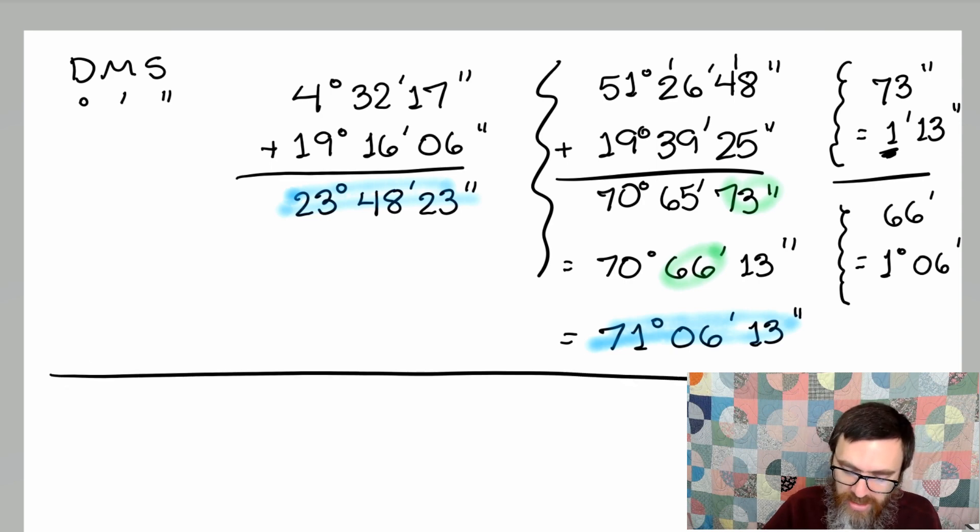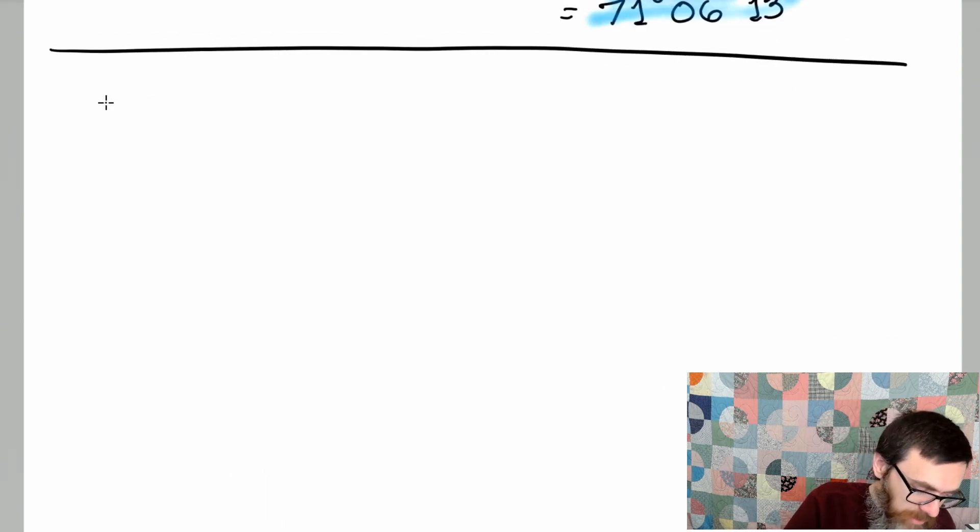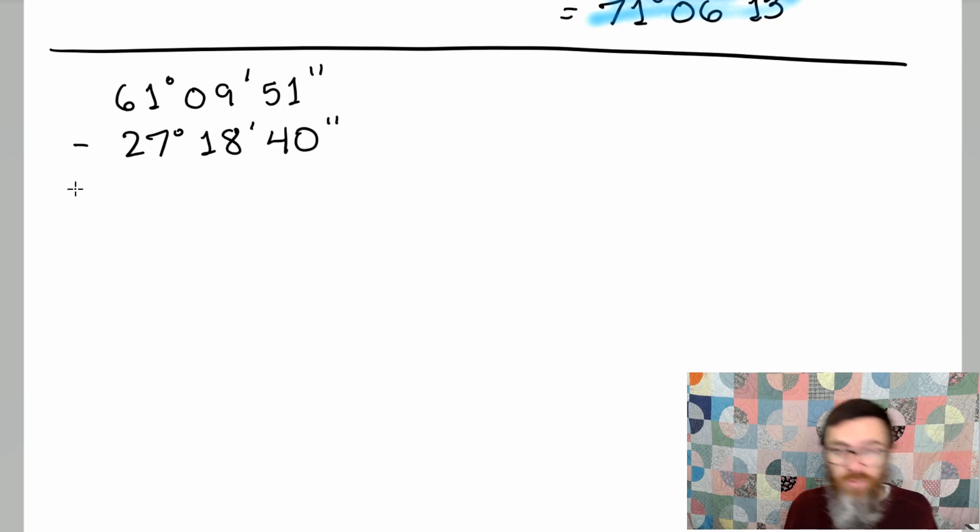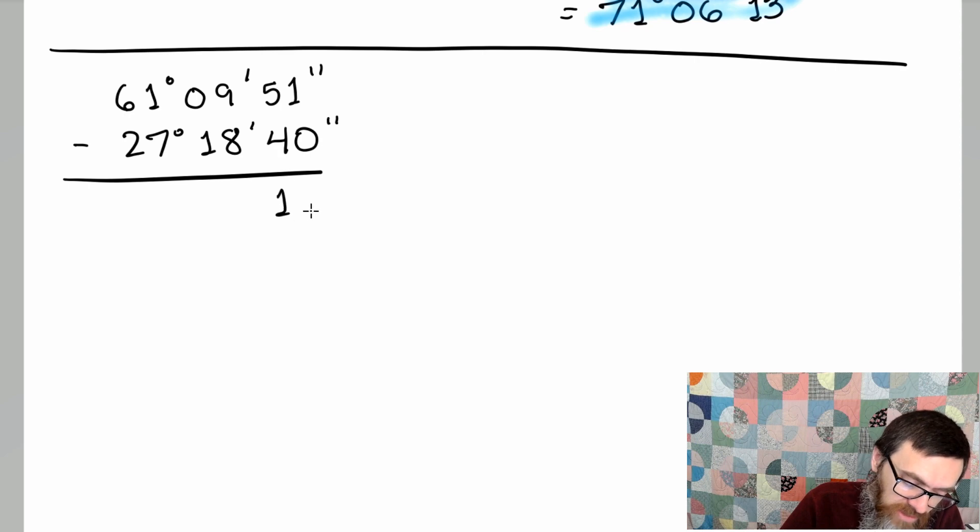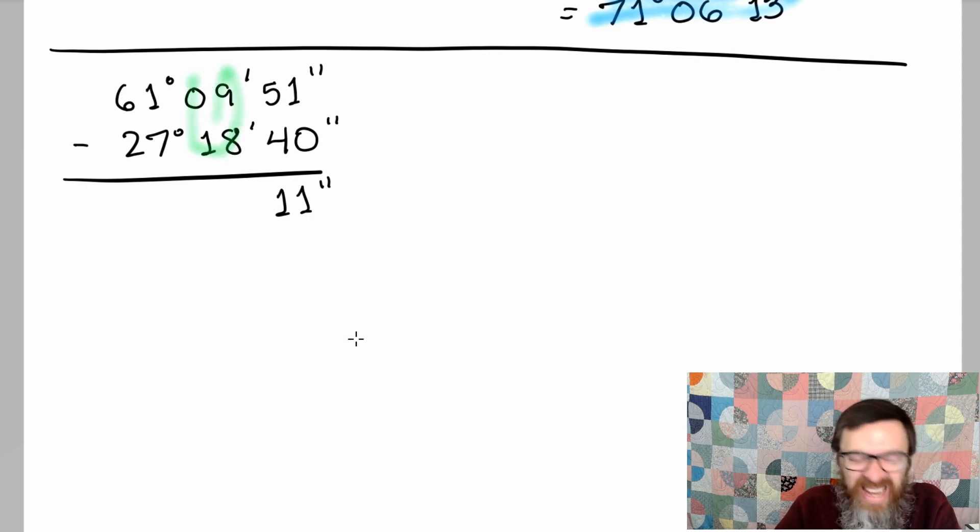Let's look at what happens when we need to subtract. Here is example number 3. 61 degrees, 9 minutes, 51 seconds, minus 27 degrees, 18 minutes, and 40 seconds. Working this from right to left like we do with typical addition and subtraction, the first part is pretty simple. With the seconds, 51 seconds minus 40 seconds gives us 11 seconds. Nice and easy. But now we run into an issue right here. We can't really take 18 away from 9.